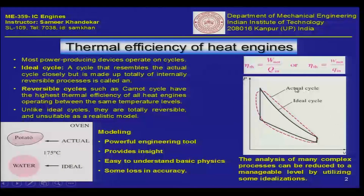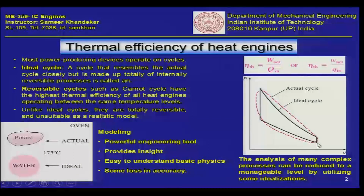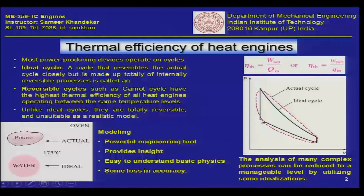To analyze a thermodynamic cycle, we have to do some idealizations. In the last lecture we saw an ideal Otto cycle: we started with a certain low-pressure, high-volume system, compressed it, and then added heat — this is an example of an Otto cycle.